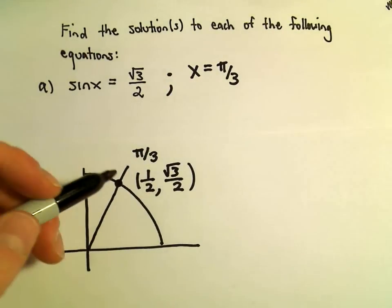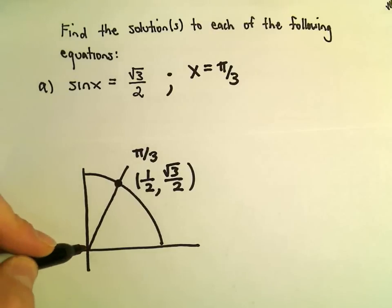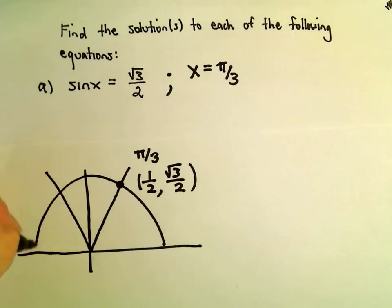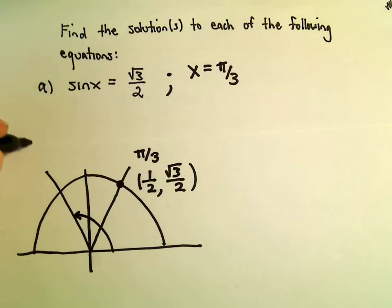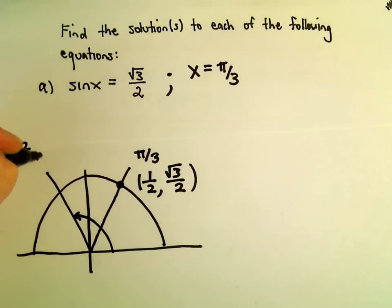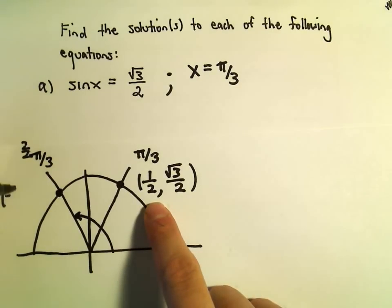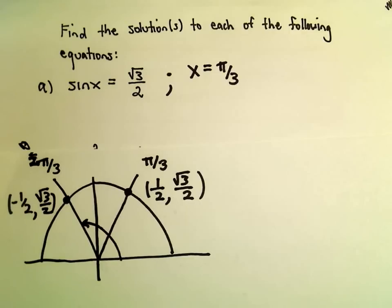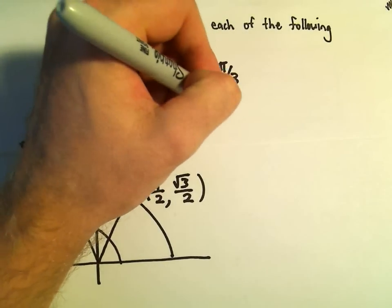Now there's other places on the unit circle where certainly sine equals root 3 over 2. Likewise, if we go over to the angle 2 pi over 3, there's my bad circle. So now at the angle 2 pi over 3, the x-coordinate is now going to be negative 1 half, but the y-coordinate again is still root 3 over 2. So 2 pi over 3 is going to be another solution. So x equals 2 pi over 3.